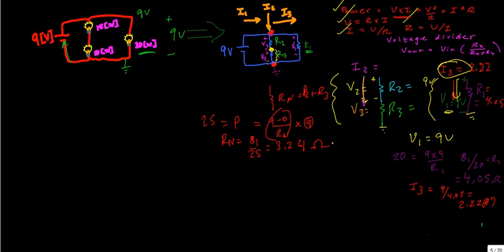Now, since we have that whole entire branch and that equivalent resistance, we should be able to get to current 2 now. And current 2 is actually going to just be 9 divided by Rn, which is 3.24 ohms. And that's 2.78 amps. So, we know that I2 is 2.78 amps.